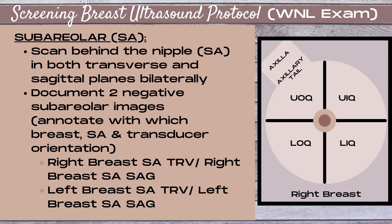There are two ways to take these negative subareolar images. You can angle away from the nipple and not include it in the picture, or you can take the image with the nipple clearly visualized. If you include the nipple in the picture, you must place the word 'nipple' on top of the nipple on the image — that annotation must be there so it's not mistaken as a mass. I personally prefer to angle away from the nipple because the nipple produces such strong shadowing that it obscures some tissue. However, it's most important that you follow the preference of your radiologist.